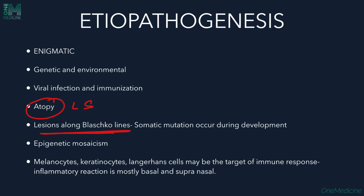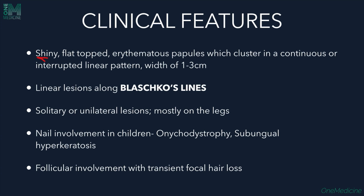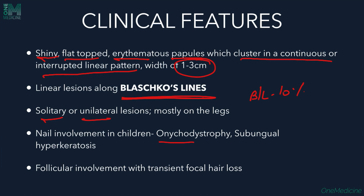Lesions are seen along the lines of Blaschko due to somatic mutation occurring during development; epigenetic mosaicism is seen. Melanocytes, keratinocytes, and Langerhans cells are the targets of the immune response. Clinically it presents with shiny, flat-topped erythematous papules clustered in a continuous or interrupted linear pattern, with a width of about 1–3 cm. Lesions may be solitary or unilateral; in 10% of cases they may be bilateral. They are mostly seen on the legs. Nails show onychodystrophy and subungual hyperkeratosis; only a single nail is affected, involving either the medial or lateral border.